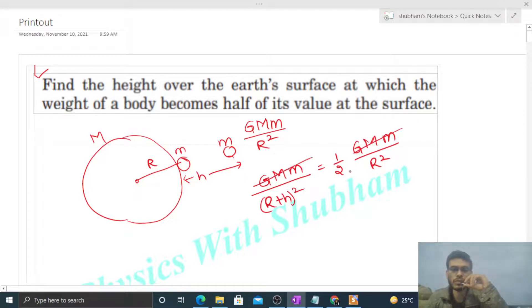From here you can easily find out the value of h. Twice of r square is equal to r plus h square. So solving this, plus minus square root 2 r equals r plus h. So from here h will be...